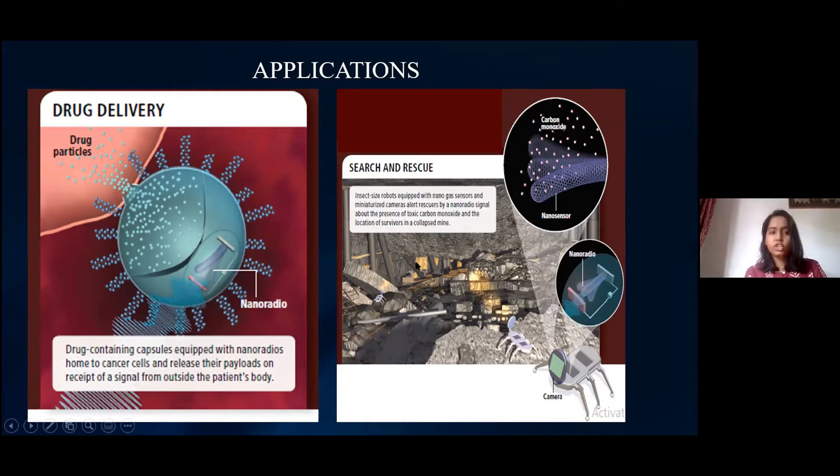In geology, like during mining, we usually have people going inside the mines and doing the process, which is very risky because people get trapped. But if we create nanotubes and small sensing devices that can go instead of people and locate harmful gases or survivors, that can save them from getting trapped into the mines. There are more applications to come. With this, I would like to conclude. Any questions?